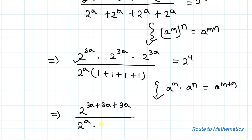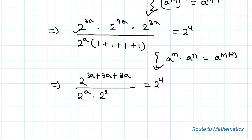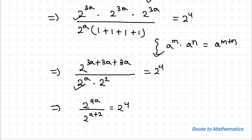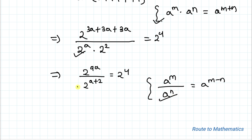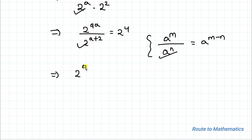Simplifying, the numerator becomes 2 to the power 9a. The denominator 4 can be written as 2 squared, giving 2 to the power (a plus 2). So we have 2 to the power 9a divided by 2 to the power (a plus 2) equals 2 to the power 4. Applying the division rule — a to the power m divided by a to the power n equals a to the power m minus n — this gives 2 to the power (9a minus a minus 2) equals 2 to the power 4.